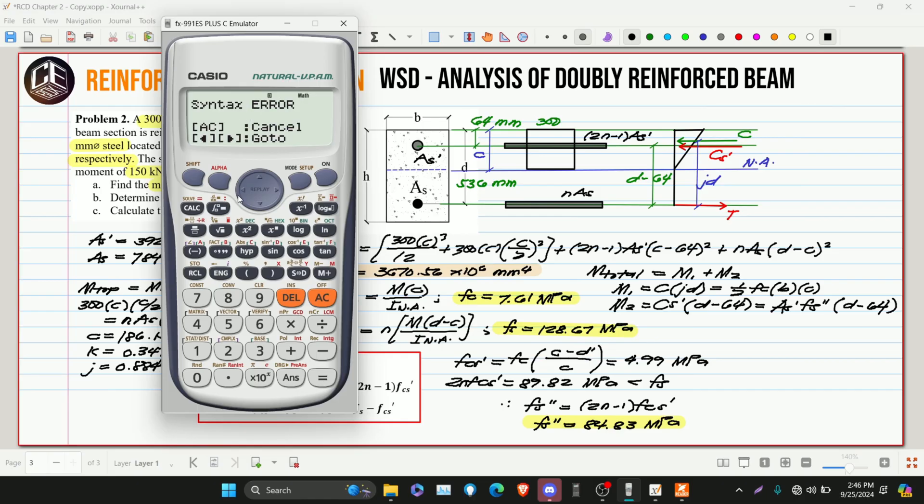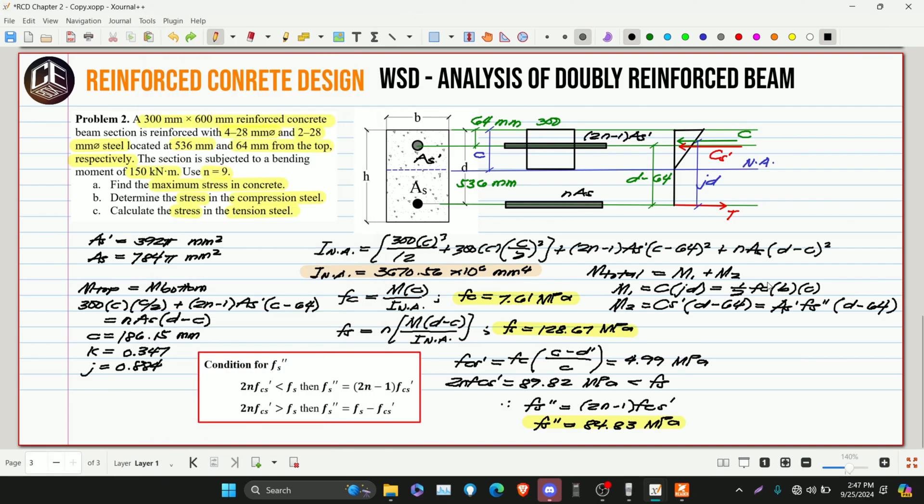The answer is slightly different. Why? Because we didn't include the moment arm JD. Oh yes! Because this is still just C. So we need JD. Our J is 0.884 times 536. Then this is D minus 64. Now we can get the answer for Fs double prime 84.84. There it is, Fs double prime 84.84 megapascal.